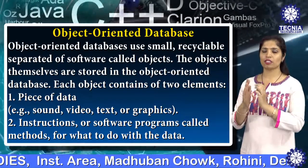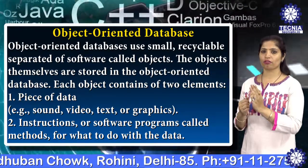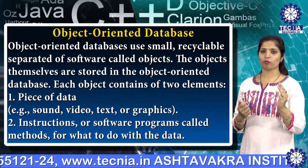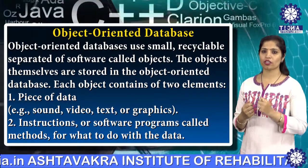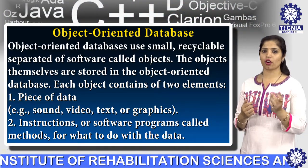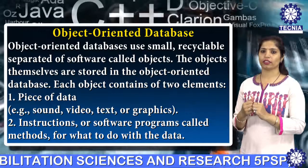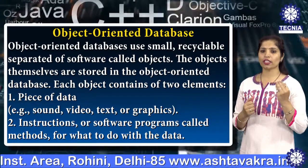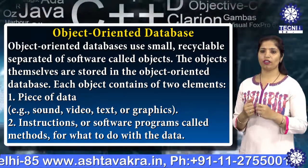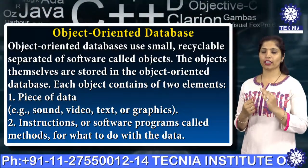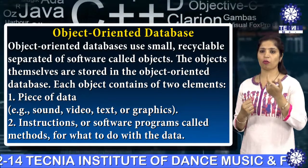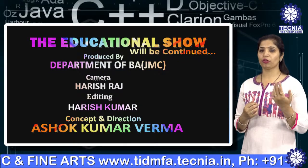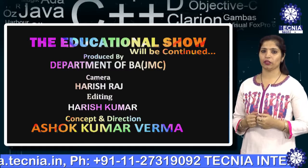The power of the object-oriented database comes from the treatment of both consistent data as found in the database and transient data as found in the executing program. Object-oriented databases use small, reusable, separate software objects. Each object contains two elements: a piece of data and instructions, which are software programs called methods. The disadvantages of object-oriented databases are that they are more expensive to develop, and most organizations are unwilling to abandon and convert from their existing databases. That covers all the types of database systems — thank you, and please subscribe to Technia TV.